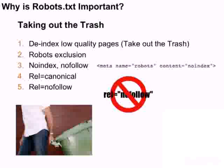In order to take out that bloat, we need to de-index those pages that are not of high quality — those 8,000 pages we talked about earlier. We need to get it down to that 2,000-page index in Google, and we do this with the robots exclusion protocol. That's why I name it as the number one solution. We can also do this with a no-index, no-follow meta tag, reduce duplicate URLs with rel canonical, and add rel no-follow links to internal pages we don't want indexed. Robots.txt is just the solution we want to use wherever possible.